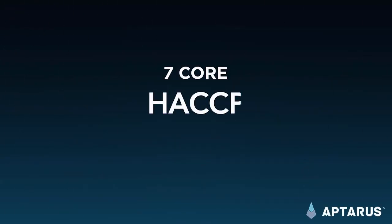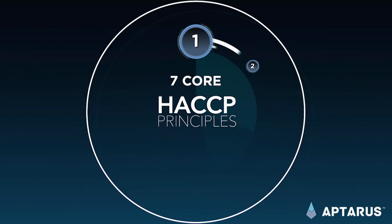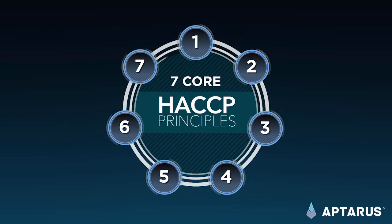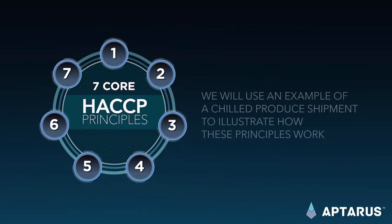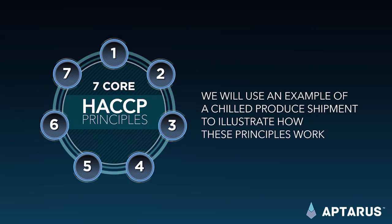There are seven core HACCP principles. We will use an example of a chilled produce shipment to illustrate how these principles work.